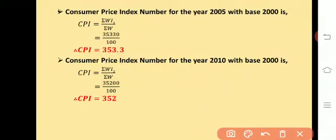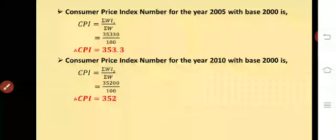These are the examples on consumer price index number. With this, we have completed the second unit on Index Numbers. From this unit, you will get: 1-mark questions (2), 2-mark questions (2), 5-mark questions (2), and one 10-mark question, giving a total of 26 marks. This unit is now complete. In the next class, we will deal with the new unit on interpolation and extrapolation. Thank you.